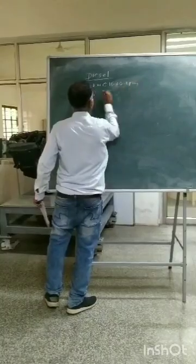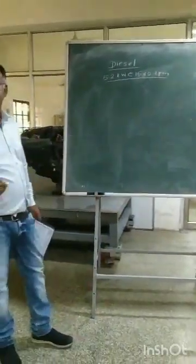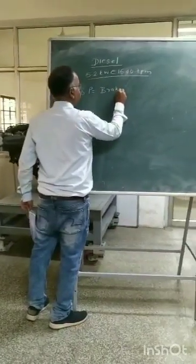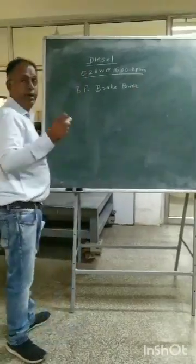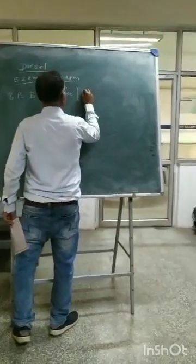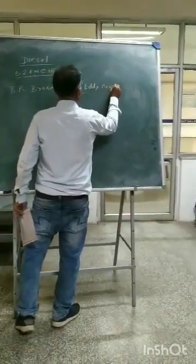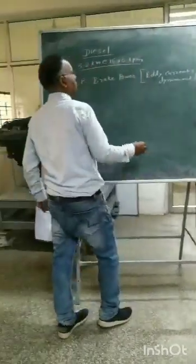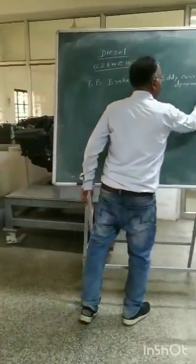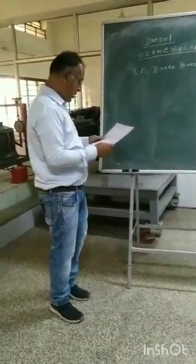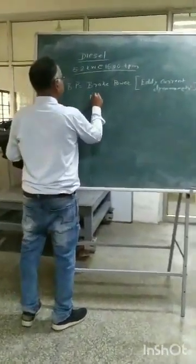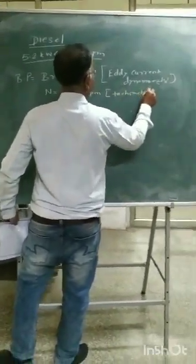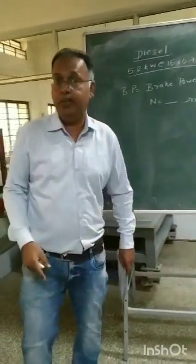The actual output of this engine is different from the rated output. The actual output is what we call the brake power. The brake power is the actual output of this engine. We measure this brake power in our setup using the KD current dynamometer. When we have seen the setup, we are recording the speed of this engine using the tachymeter, or it is already displayed in the setup.